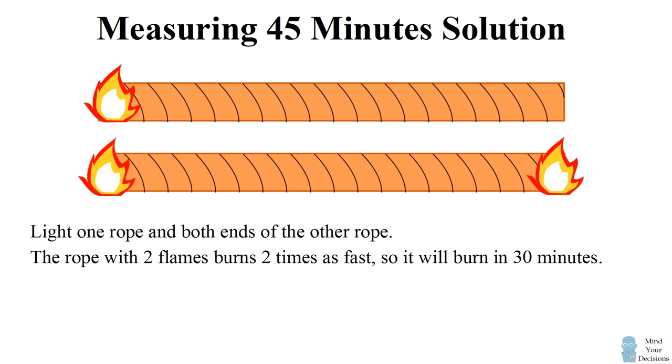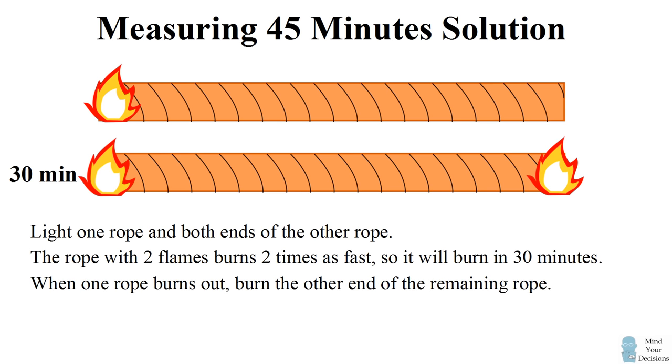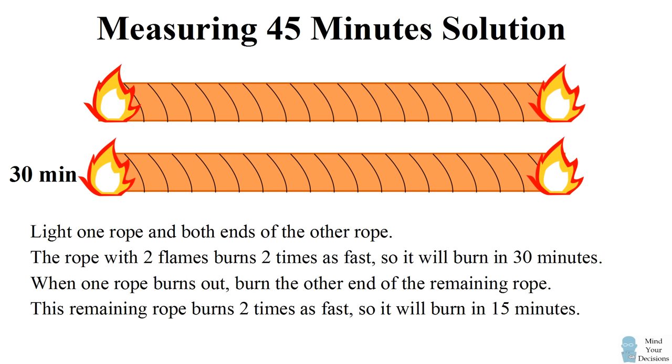At this point, the other rope will have 30 minutes remaining on it. So you then light the other end of that rope, and that will give you a rope which is burning two times as fast as it normally would. So that remaining rope will burn up in 15 minutes. So if you add up the 30 minutes and the 15 minutes, you get a total of 45 minutes from start to end.